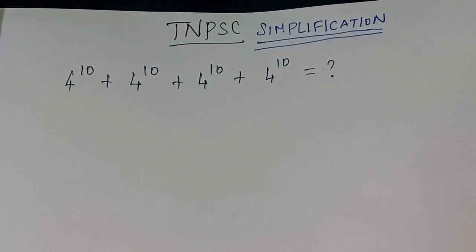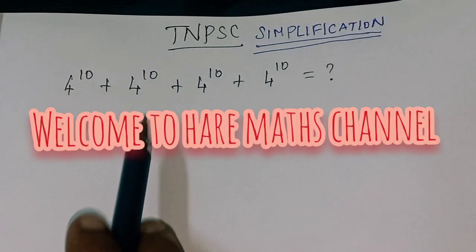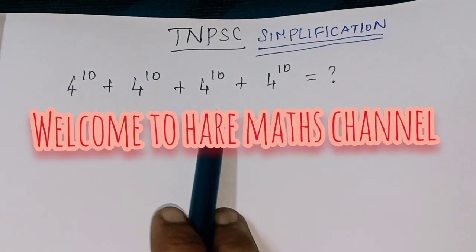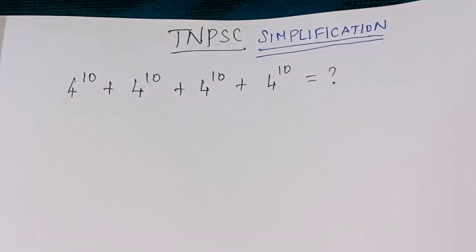Today's topic is TNPC simplification: 4 power 10 plus 4 power 10 plus 4 power 10 plus 4 power 10 — equal to what?